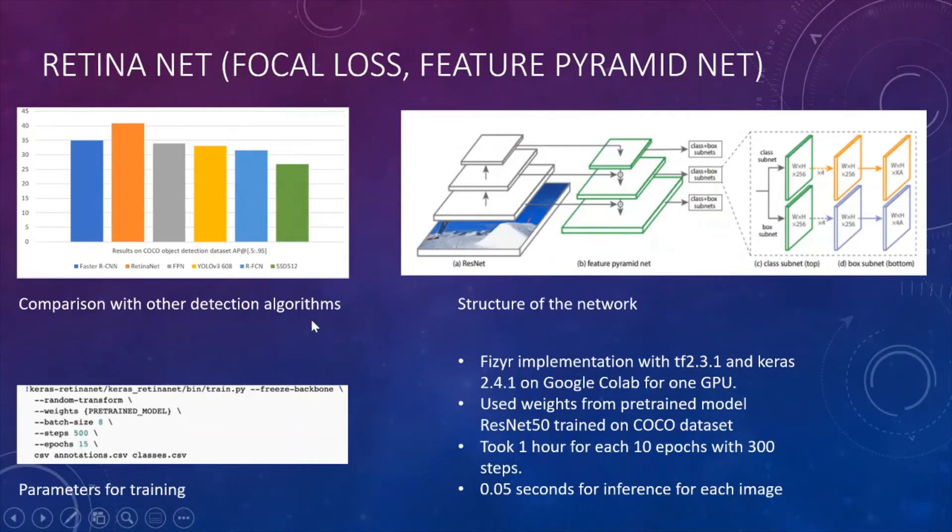The first method that we applied was RetinaNet. RetinaNet main features are focal loss, which can give some weights, more weights for misclassified examples. And also Feature Pyramid Net. Pyramid Net can help in distinguishing small objects. Small object recognition currently was a huge problem in previous object detectors. And comparing RetinaNet to other object detectors that occurred before RetinaNet, like Faster RCNN and YOLO version 3, RetinaNet performed the best on the COCO dataset at 40 in average precision. That's why we wanted to use RetinaNet.